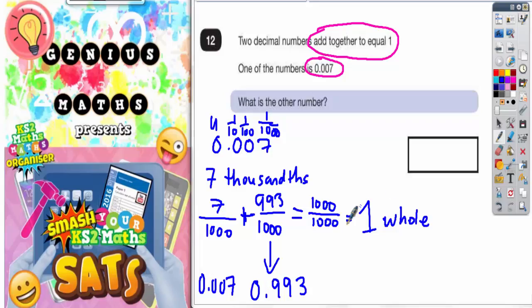The other way of doing it is to actually do a subtraction column method. So if we try and do one subtract 0.007, let's see what we get. Put your decimal points in first. Now remember, one would be before the point, and 0.007 would go like that.